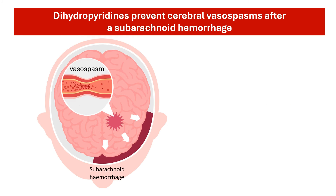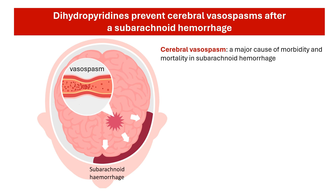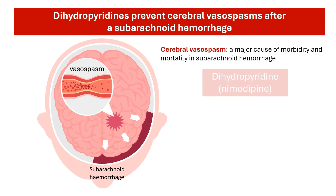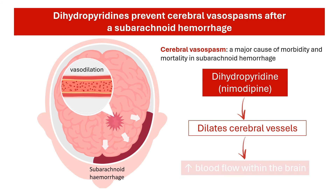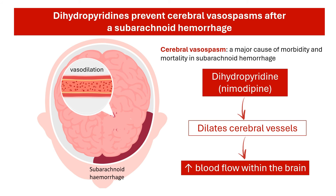Lastly, dihydropyridines are used to prevent cerebral vasospasms after a subarachnoid hemorrhage. Cerebral vasospasm is estimated to occur in up to 70% of all subarachnoid hemorrhage patients and is a major cause of morbidity and mortality. The dihydropyridine specifically used is nimodipine, which helps improve cerebral blood flow to avoid ischemic neurologic deficit and further complications of subarachnoid hemorrhage.